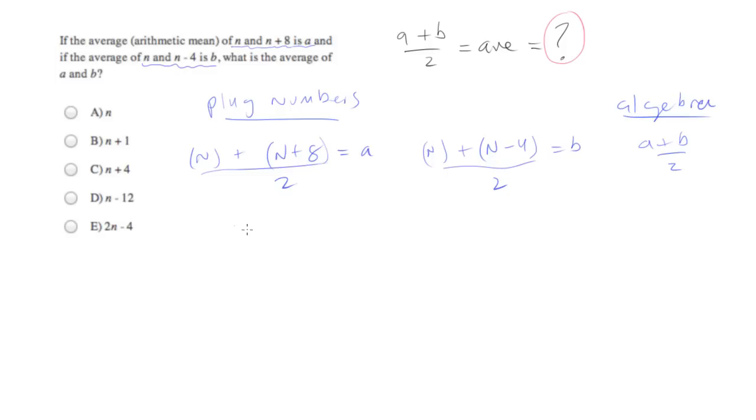So we need to pick a number for n. I like small primes, so I'm going to pick 2. So let's do 2 plus 2 plus 8 over 2. That is 10 plus 2. 12 over 2 is 6. And I like to keep a running track of what I've picked. So we pick n equals 2, and we just calculated a equals 6.